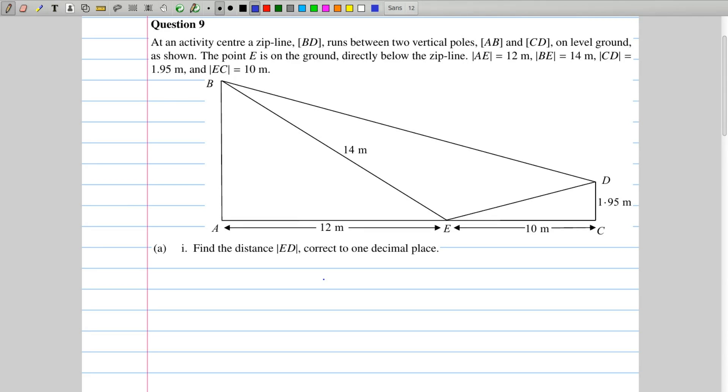We're told about this activity center with a zip line running from point B to point D. It's held up by two vertical poles, AB and CD, on level ground. There's a point E on the ground directly below the zip line, and we're given some measurements shown on the diagram.